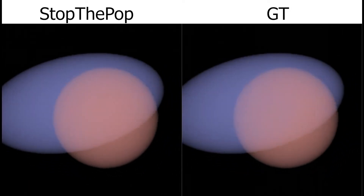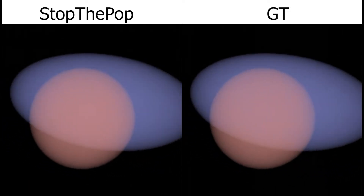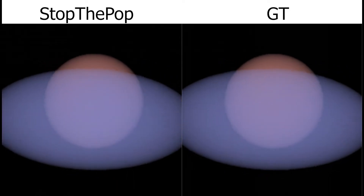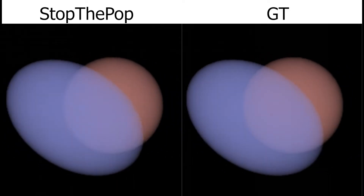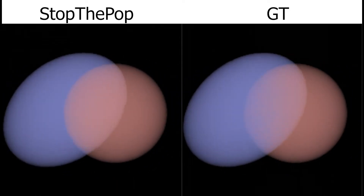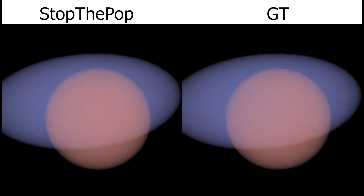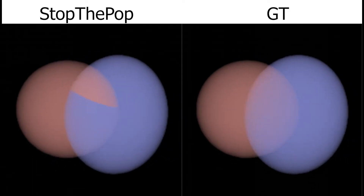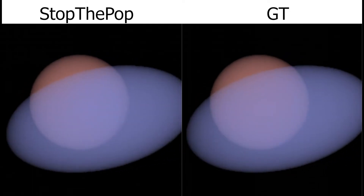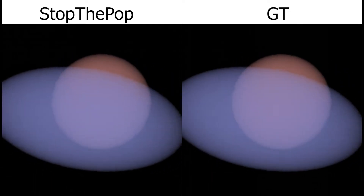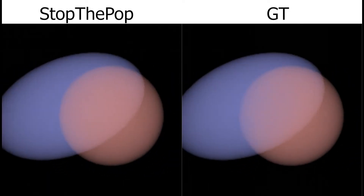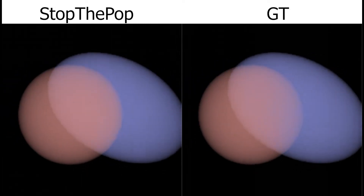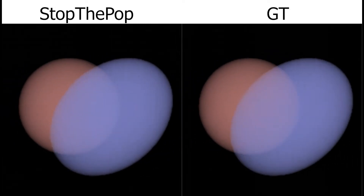The authors of Stop the Pop suggest that the popping can be removed by sorting the primitives per pixel, and using a more clever depth for the primitives that is rotationally invariant. However, this depth is still translationally invariant, and these two primitives are offset from the rotation center. As a result, a moving line flickers across the screen.